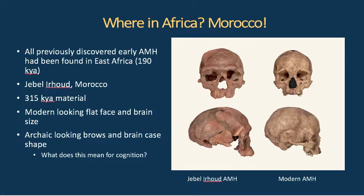Jebel Irhoud, Morocco, dates to 315,000 years. It has a modern-looking flat face and brain size. This skull overall looks kind of primitive, but in most significant ways it looks anatomically modern. We do have some archaic features — the brain case is a little on the low side, and it does have a larger brow ridge compared to a fully modern specimen.